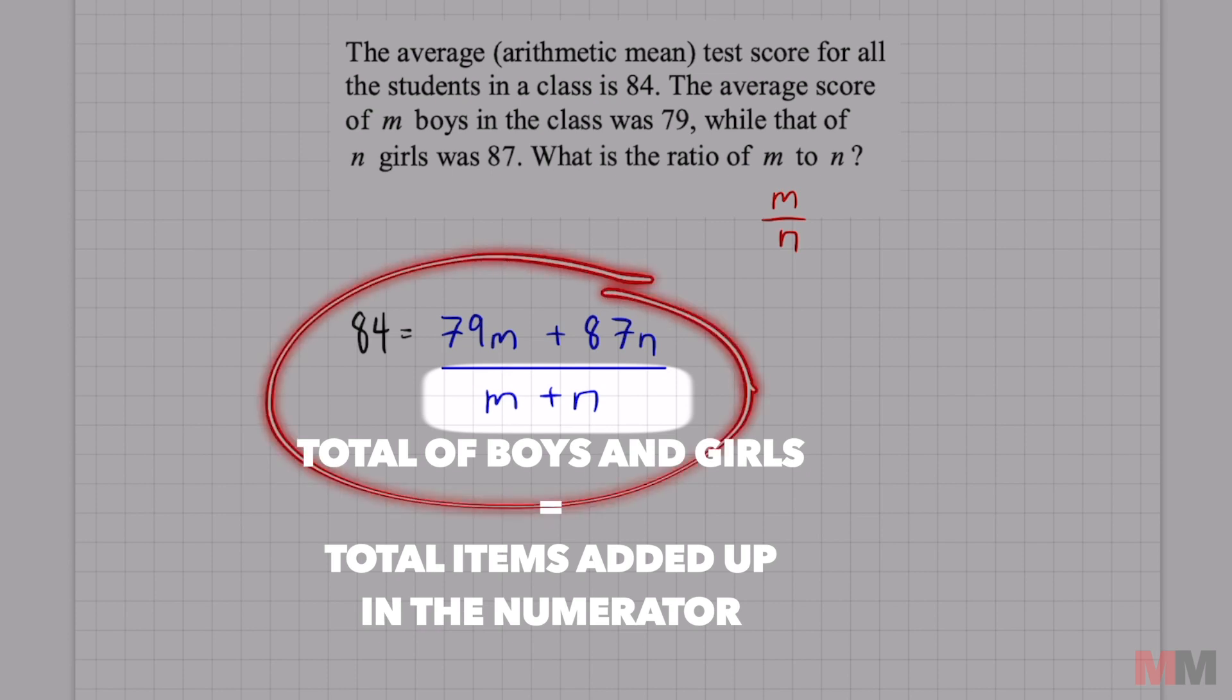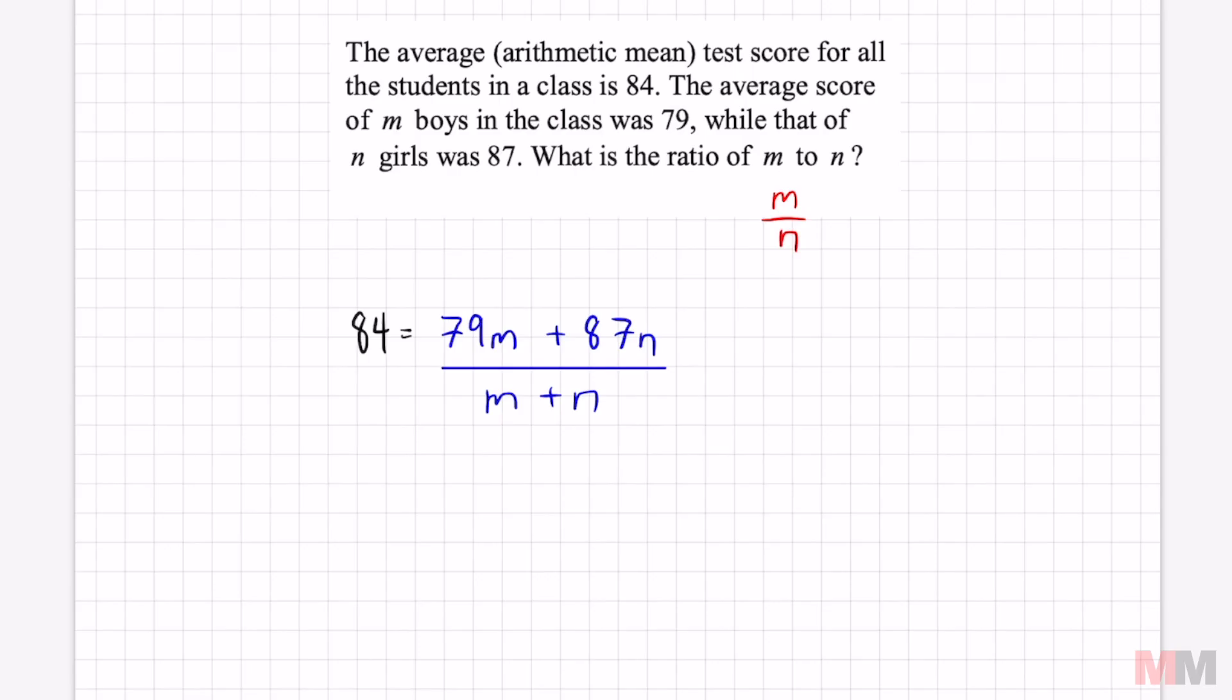Now we just have to do some simple algebra to find out what that equals. This is a rational equation. To get rid of this m plus n at the bottom because I don't want a denominator, just multiply both sides by m plus n. Let's cancel that out. So I might as well distribute the left side and I will get 84m plus 84n equals 79m plus 87n.